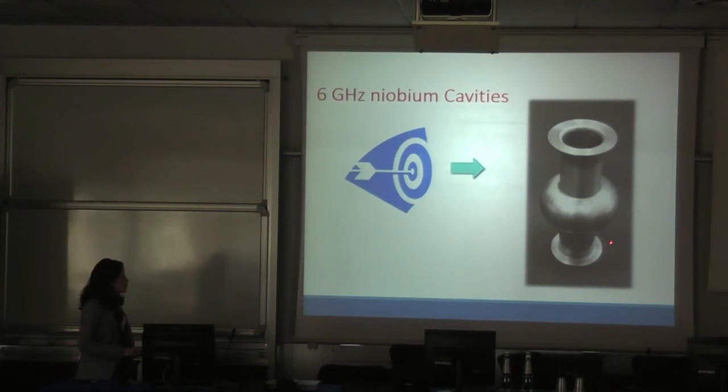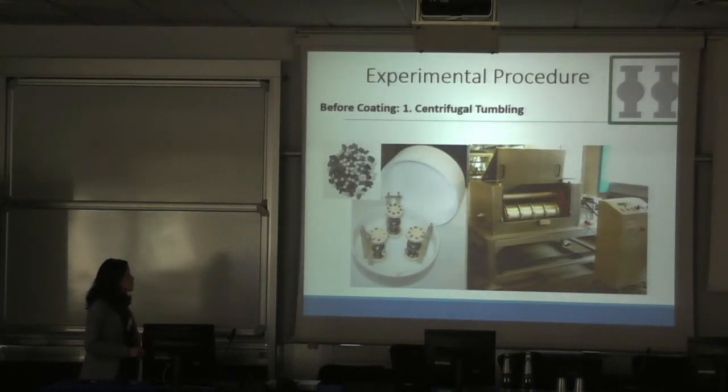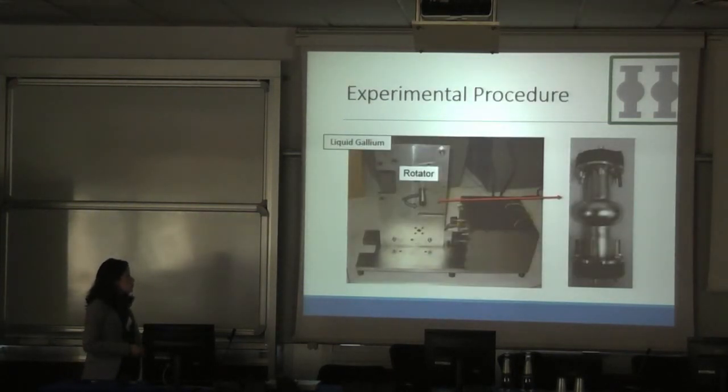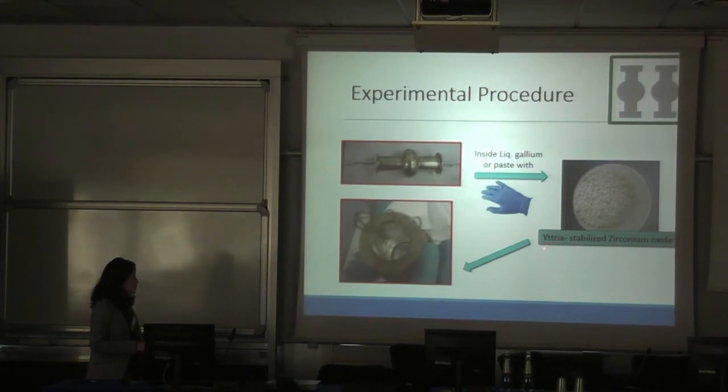However, we did this work to try to precipitate A15 superconductors on 6-gigahertz niobium cavities. Before coating, we treat with centrifugal tumbling, then we perform the chemical treatment, the BCP solution, after high-pressure water rinse. How we try to apply the gallium or aluminum? We introduce, in this case, only liquid gallium, and we use a rotor to try to beat adherence, to stick the gallium on the niobium surface. Then we also use this medium to try to apply the liquid gallium or paste. And after, we perform the heat treatment.